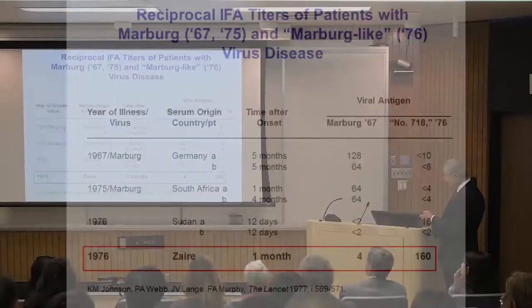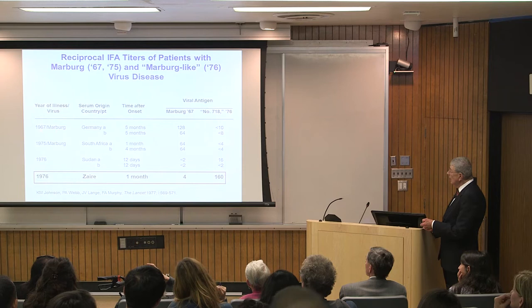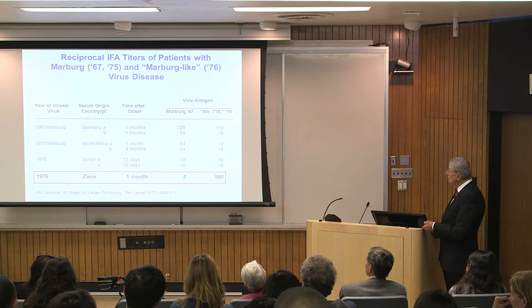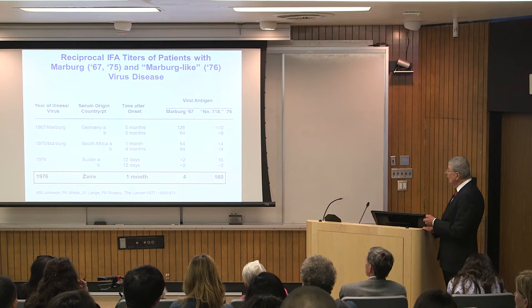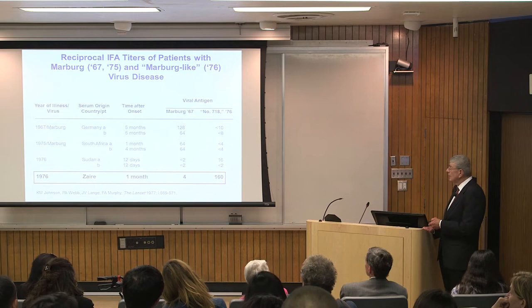There was a serum specimen and a virus specimen at the CDC. We had Marburg antigen, the Zairean specimen, and serum specimens from Marburg in 1967 and South Africa in 1975. The serum from Zaire 1976 did not react at all with Marburg 1967, but had a very high titer to Zaire 1976. So this was now a new virus — that is where the discovery and identification occurred.